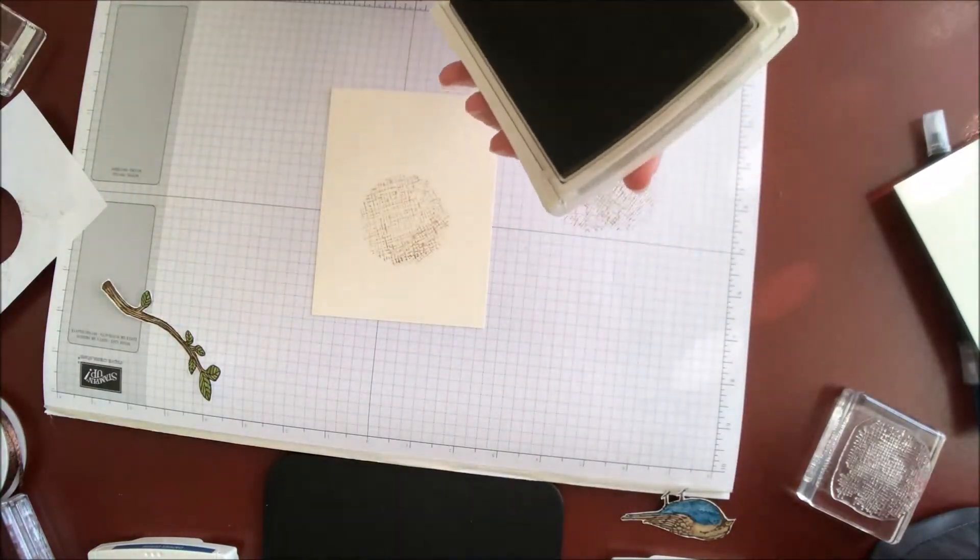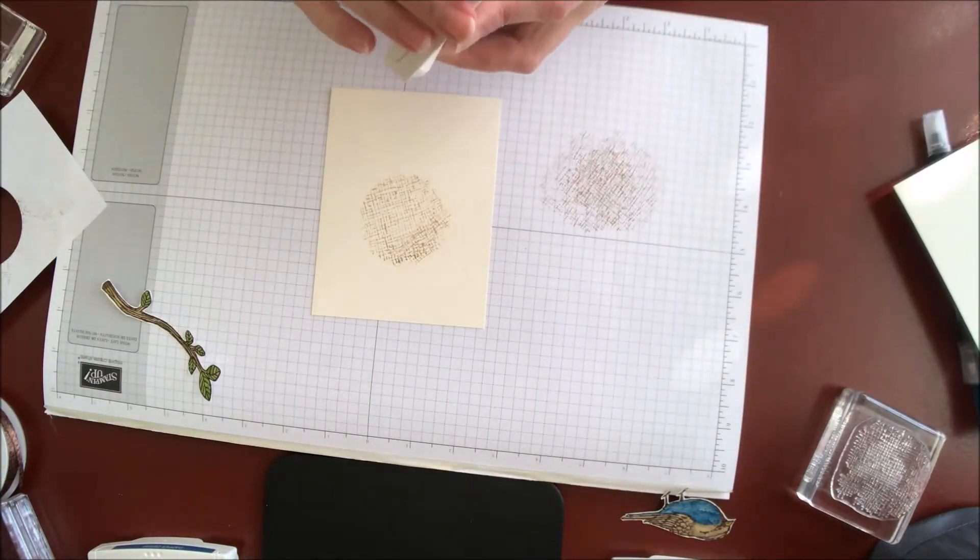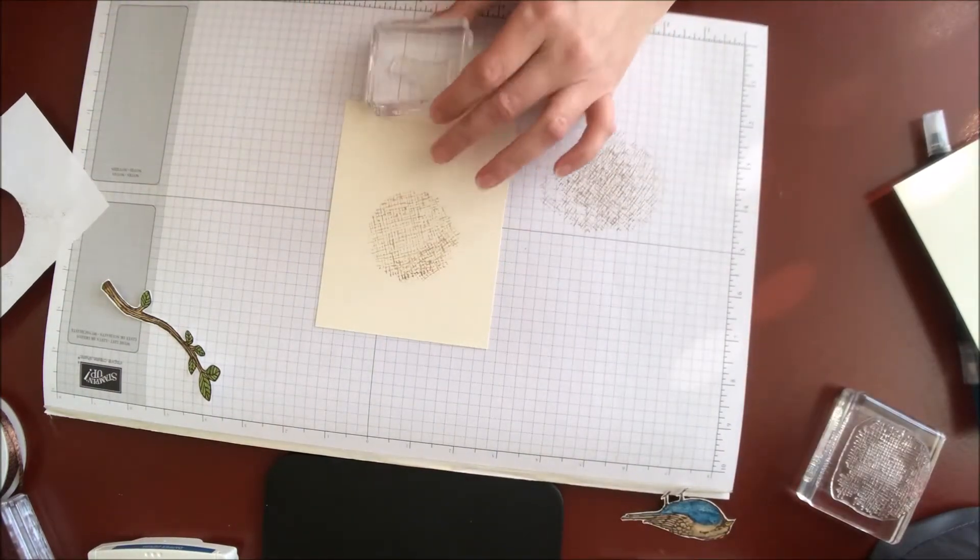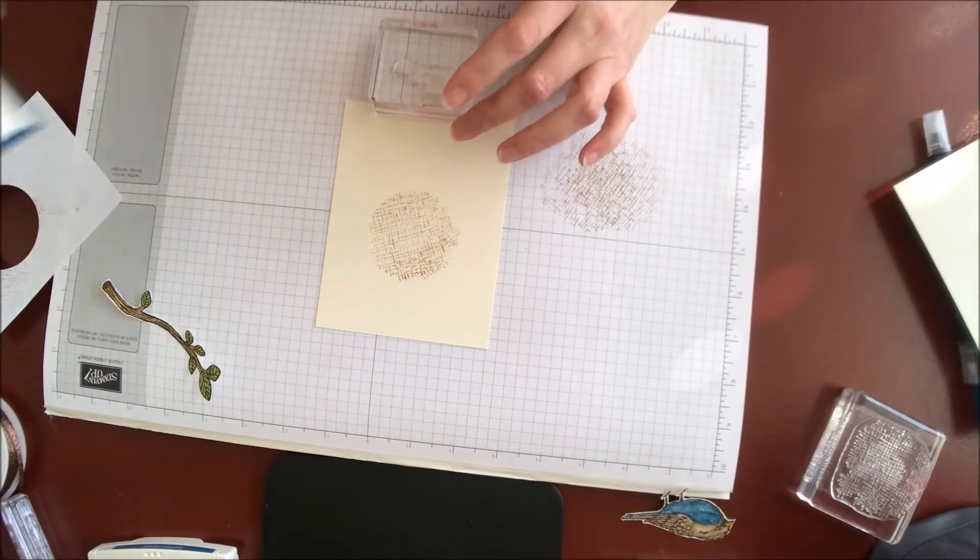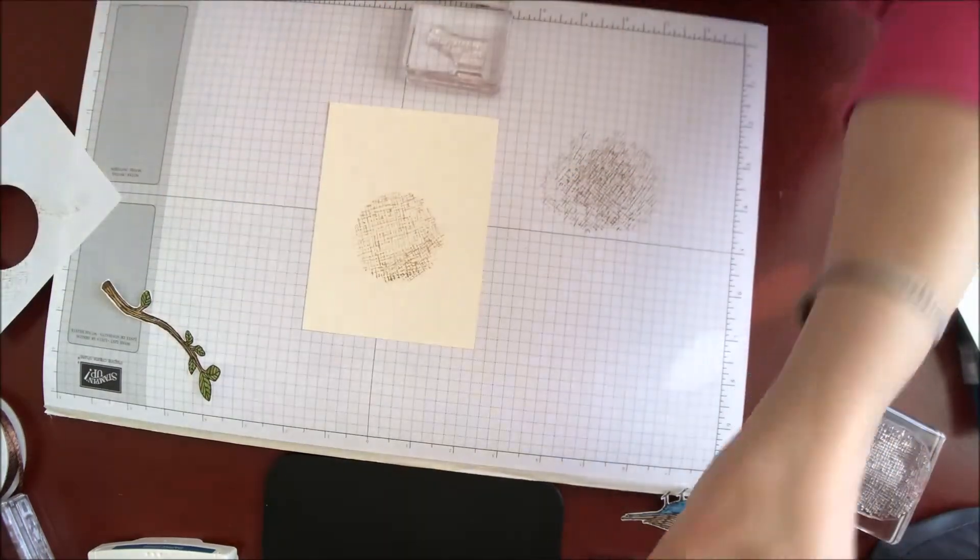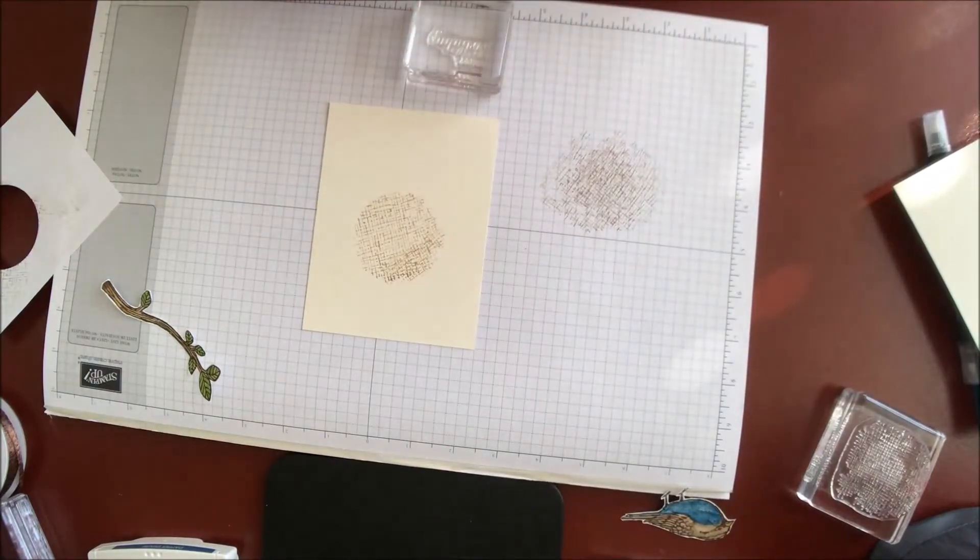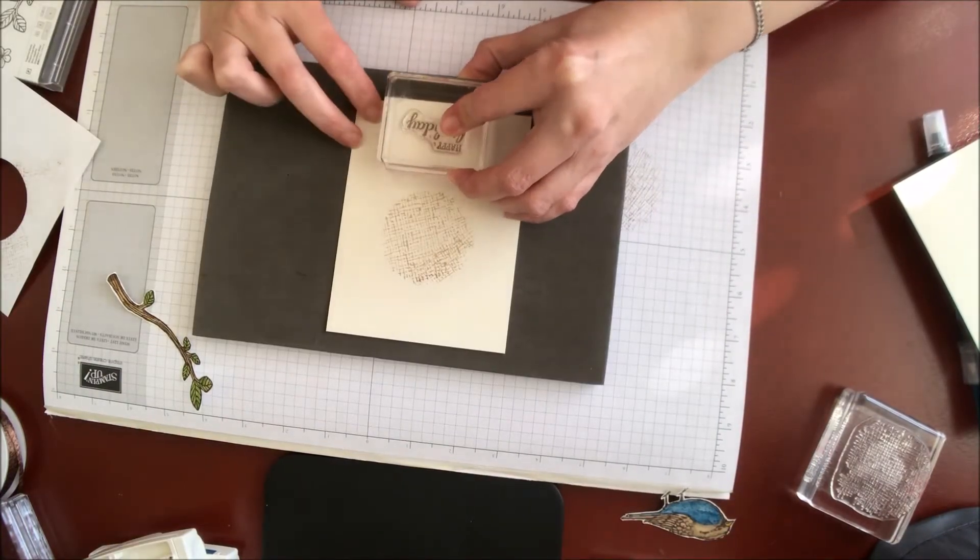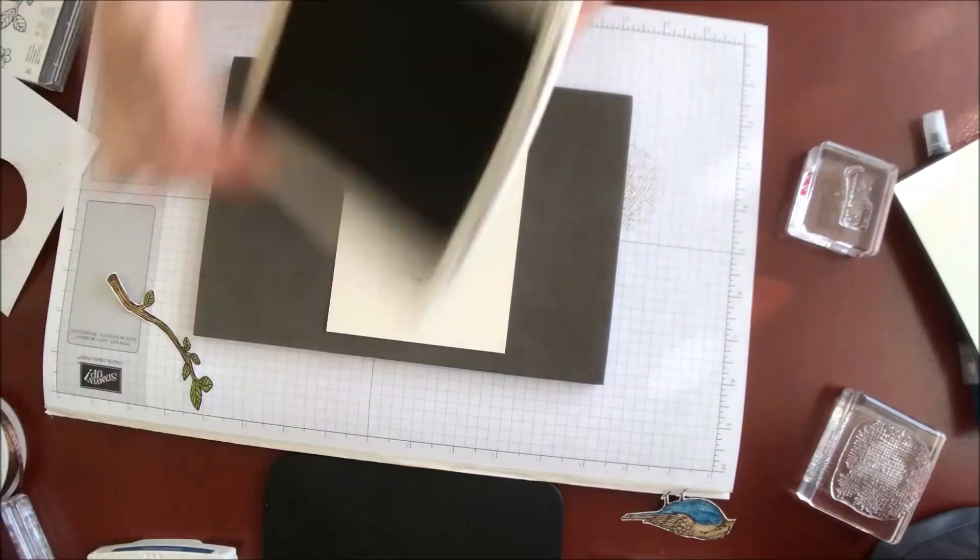Okay, and I've done that in crumb cake. Next, I'm going to stamp my sentiment. Now in this one, I used the thoughts for you sentiment. But in this one, I'm going to do happy birthday. And I'm going to stamp the sentiment in soft suede. Okay, done with that.